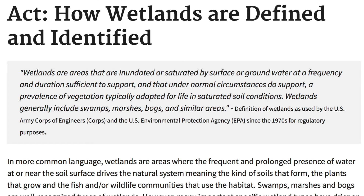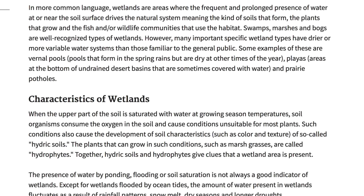Essentially, what it comes down to — if you take the time to read through it and really process what it's saying and read the follow-up explanation — it's basically saying that wetlands are areas where there is a frequent or prolonged presence of water either on the soil or near the surface of the soil, creating a natural ecosystem where certain kinds of plants can grow and fish or wildlife can use it as a habitat.